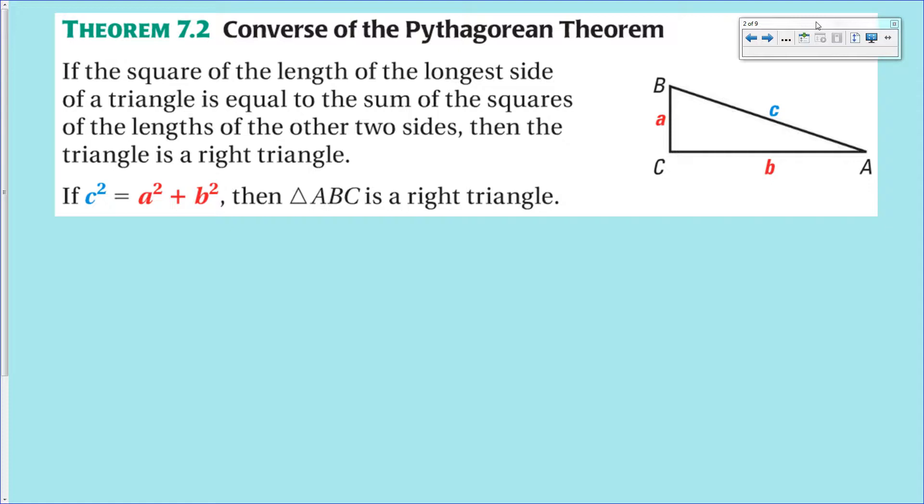The converse says just the opposite. If you are given three lengths of a triangle and you plug them into the Pythagorean Theorem equation itself and find that equation to be true, then that proves that those three lengths make up a right triangle.